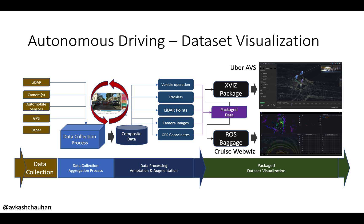Here we look at how, after data is collected, it can be packaged in a way that can be used in various open-source dataset visualization subsystems. We have two examples: one is from Uber AVS, which uses a package called XVIZ to render the data, and the second is an open-source tool called WebViz from Cruise, where you can drop a ROS bag file — ROS stands for Robotic Operating System — and visualize the autonomous dataset.